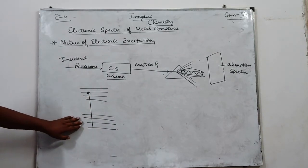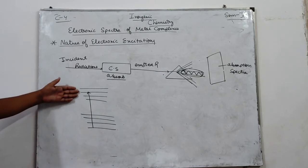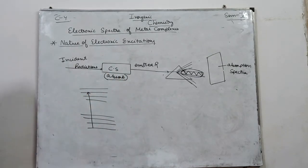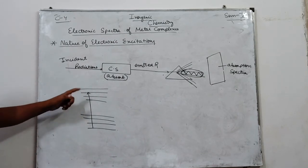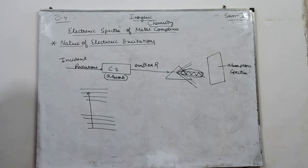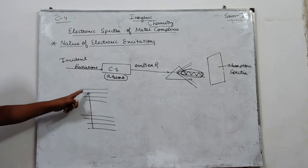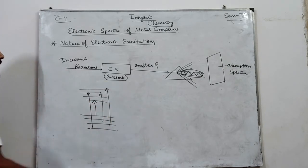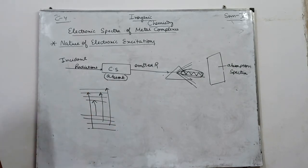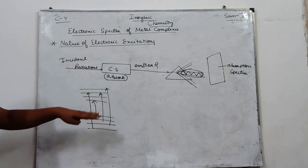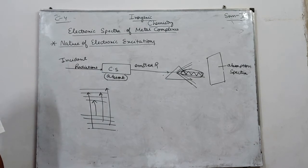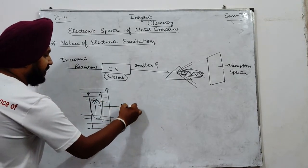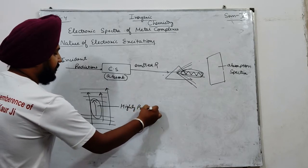There are several ground states with different energies, and several excited states with different energies. Whatever amount of radiation is absorbed, the energy difference will match a particular transition level. Any transition from any level is possible — here I show the transition from the 1st ground state to the 3rd excited state. This transition is highly probable.